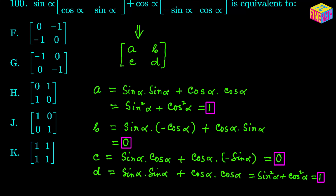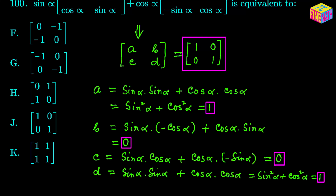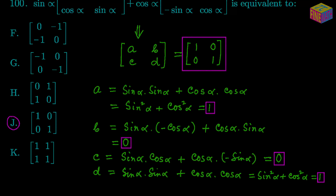By now we have calculated all the elements of the result matrix. The result matrix is going to look like this: [1, 0; 0, 1]. So the answer is 1, 0, 0, 1 — and if you look at the answer options, this matrix appears under option J. So option J is the correct option. I hope everything made sense. Thank you for watching. See you in the next video.